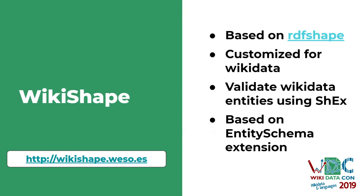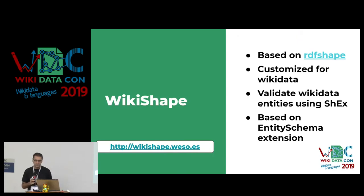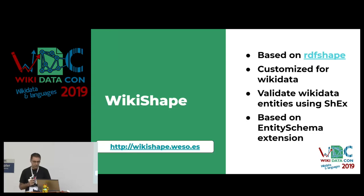Before coming here, in the last month, I started a fork of RDF Shape specifically for Wikidata — it's called WikiShape, and I presented it yesterday as a present for Wikidata. What I did is remove all the stuff not related to Wikidata and put several things hard-coded, for example the Wikidata SPARQL endpoint. Someone asked if I could do it also for Wikibase, and it is very easy to do that as well. WikiShape is quite new — I think most features work, but there are some that maybe don't. If you try it and want to improve it, please let me know.